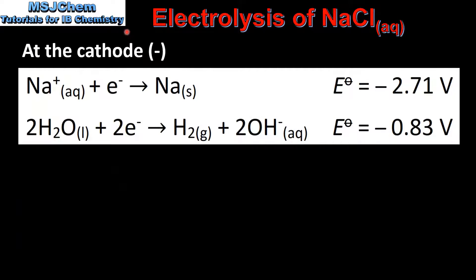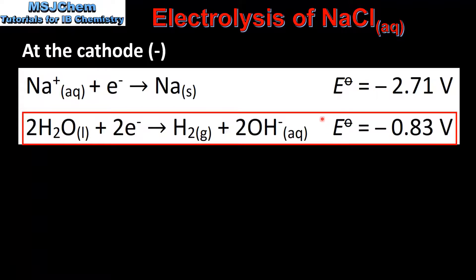Next we look at the electrolysis of aqueous sodium chloride solution. The two possible reactions at the cathode are the reduction of sodium ions to form sodium metal and the reduction of water to form hydrogen gas. Just like in the previous example, the reaction with a more positive electropotential will take place, therefore we'll have the reduction of water to form hydrogen gas.